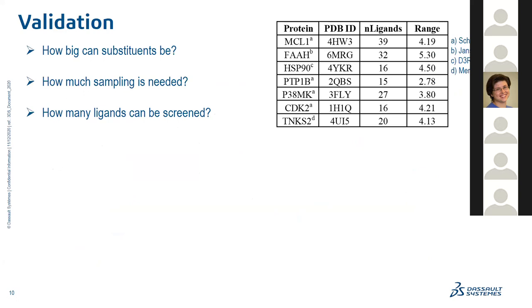To validate this workflow, we collected a dataset from prior FEP studies. Our dataset comprises 165 ligands spread over seven different proteins, with a dynamic range of close to 4 kcal/mol per dataset — representative of a typical lead optimization scenario. We had to source these datasets from different places because the MSLD domain of applicability is subtly different from FEP. In FEP, you can have congeneric datasets with changes all over the molecule, but the ideal domain of applicability for MSLD is directed chemical space search at distinct sites on the molecule. From these datasets, we asked three basic questions: how big can substituents be, how much sampling is needed for converged and accurate free energy values, and how many ligands can be included in a single calculation?